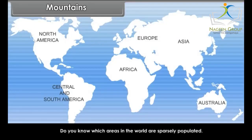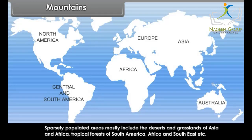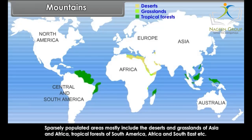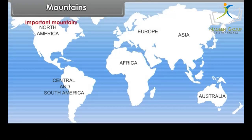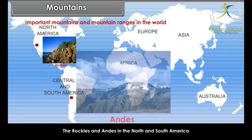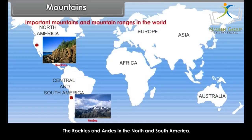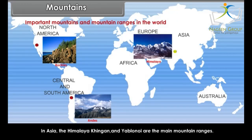Sparsely populated areas mostly include the deserts and grasslands of Asia and Africa, tropical forests of South America, Africa and South East Asia. Some important mountains and mountain ranges in the world are the Rockies and Andes in North and South America. In Asia, the Himalaya, Kingan and Yablone are the main mountain ranges.